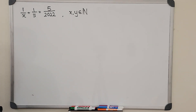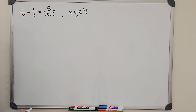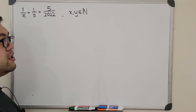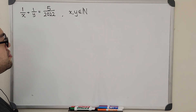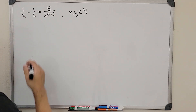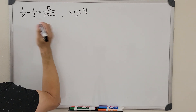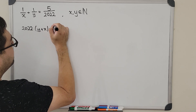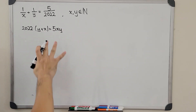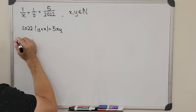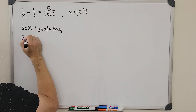To solve this kind of problem, we first want to get rid of the fractions, because we'd love to work with integers so we can use ideas from number theory. To do that, we find the common denominator, which is 2022xy. Multiplying through, we get 2022y plus x equals 5xy. Note that x and y are playing the same role, so it doesn't matter which goes first.